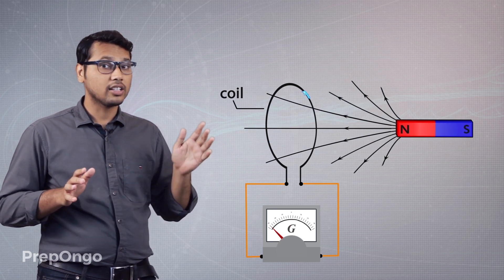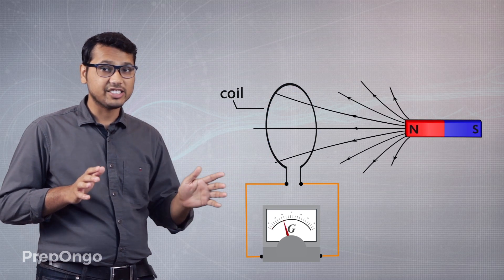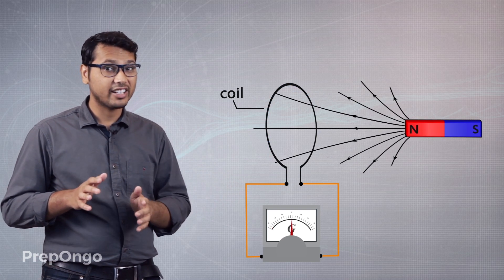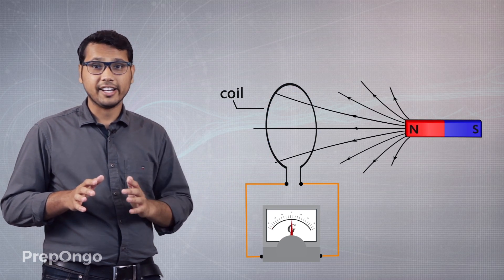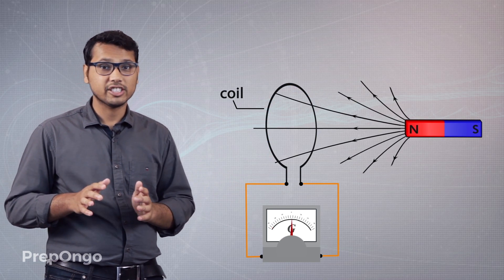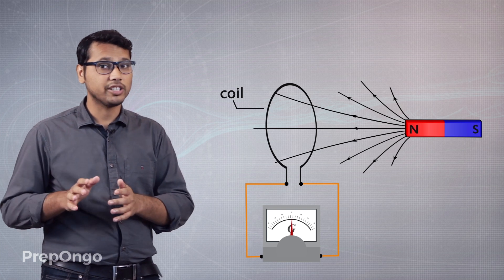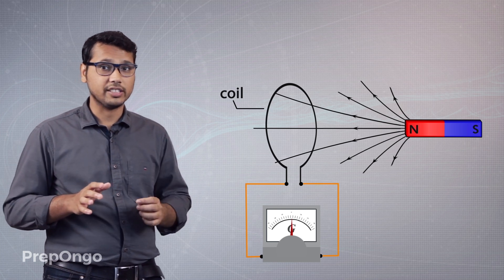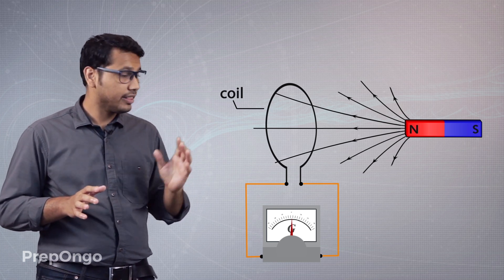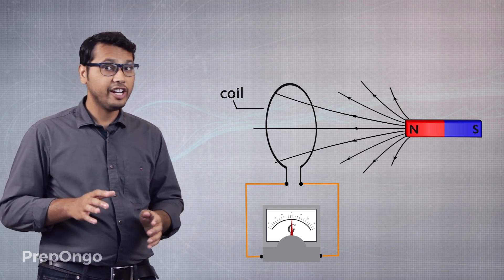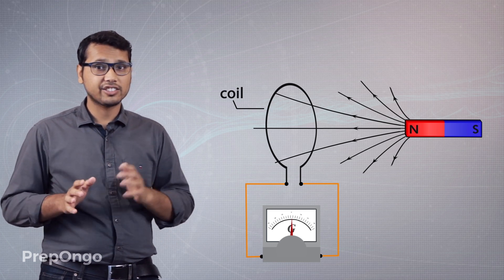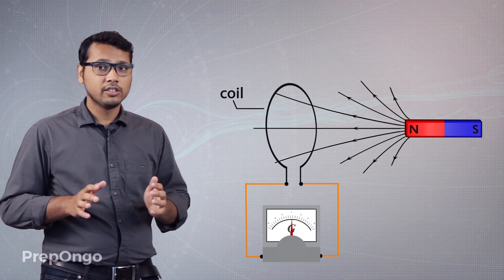The galvanometer deflects in the right direction, which is just opposite to the previous case. In this case the magnetic field lines are decreasing through the coil, so the galvanometer deflects in the opposite direction.